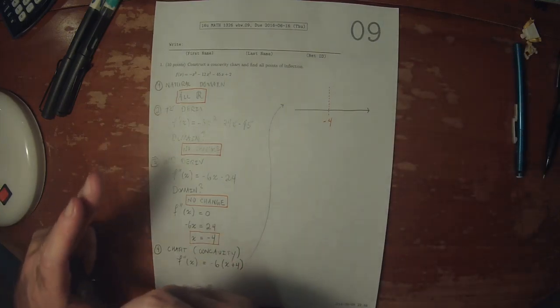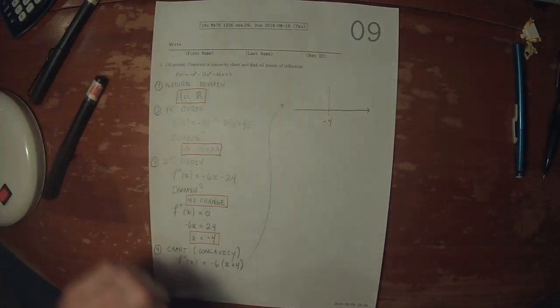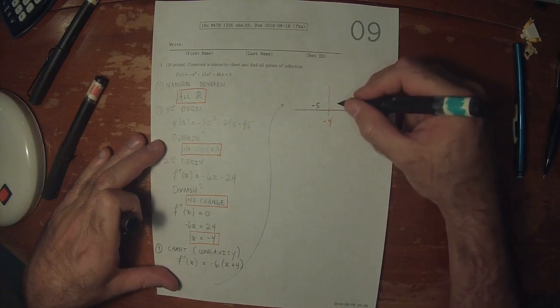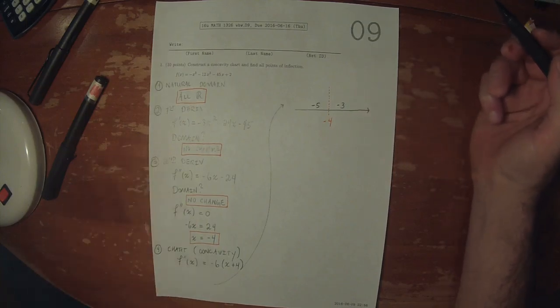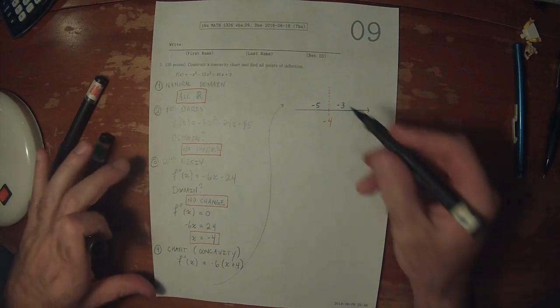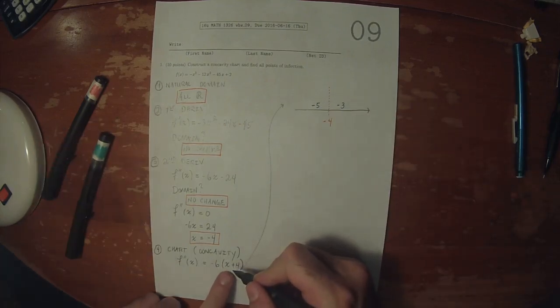Now, we need to select points in each region. I'll select negative 5 to the left and negative 3 to the right. Now, we need to plug these values into this expression.